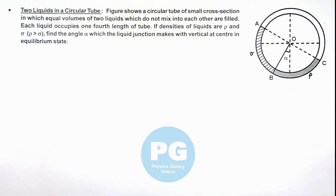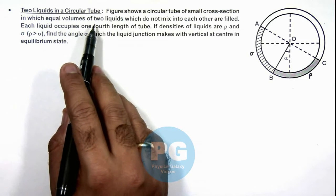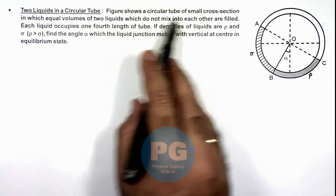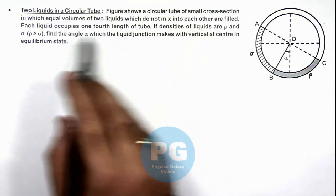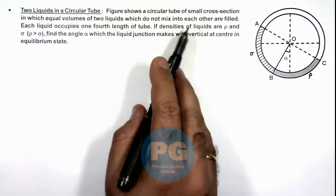In this illustration, we'll analyze two liquids in a circular tube. Here we are given that the figure shows a circular tube of small cross-section in which equal volumes of two liquids, which do not mix into each other, are filled.